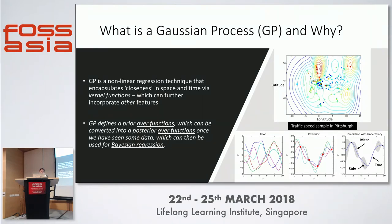You can do Bayesian inference on Gaussian processes or perform Bayesian updates without retraining the whole model, because training is expensive. If you know something is happening, you can update the parameters in a Bayesian inference fashion, which is much faster than retraining everything in light of new data or new events.